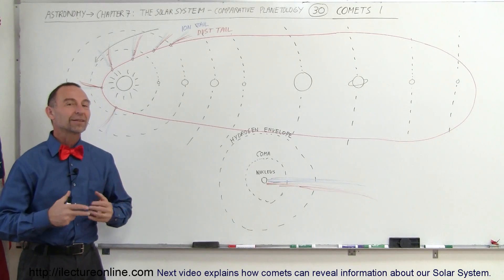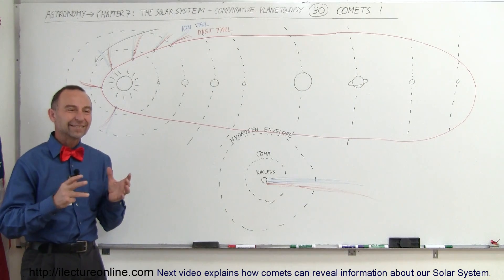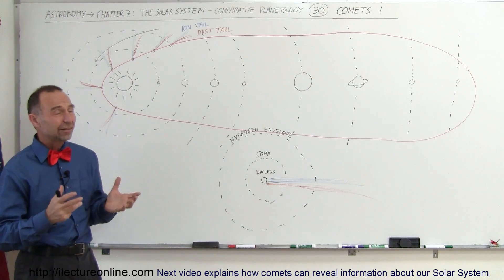Welcome to Electron Line and now let's talk about the comets in our solar system. Comets are mostly made out of ice and dirt and rock, predominantly ice.